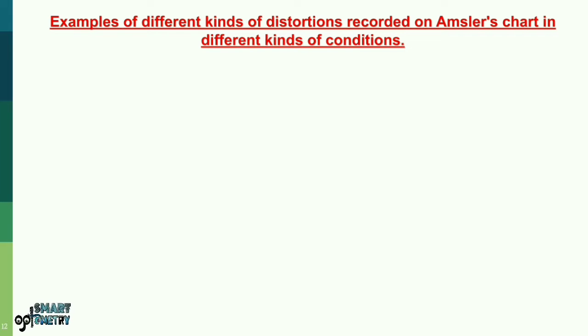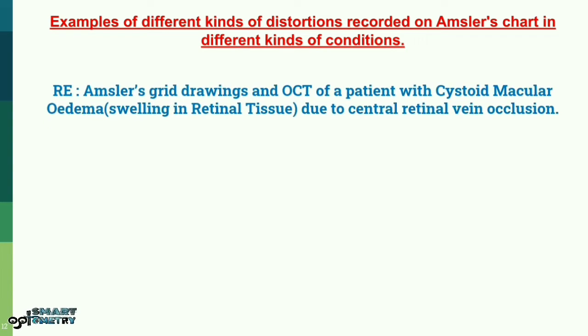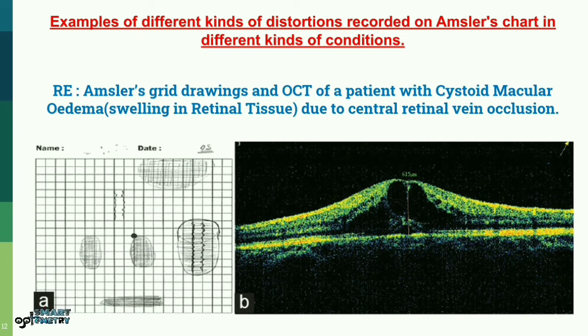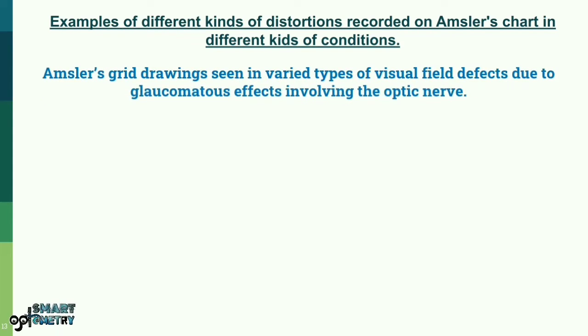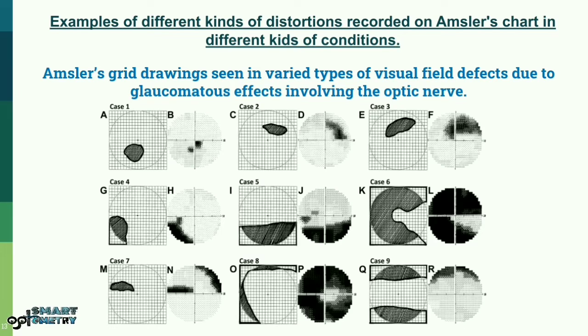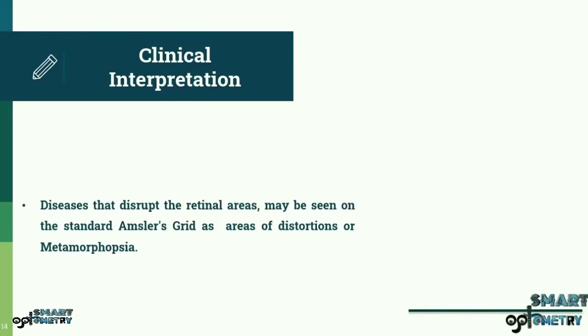Let us now look at the examples of different kinds of distortions recorded on Amsler's chart in different kinds of conditions. Here you can see a patient's Amsler's chart findings for the right eye. That is, in right eye, Amsler's grid drawings and OCT of a patient with cystoid macular edema, that is swelling in the retinal tissue due to central retinal vein occlusion can be seen here. Another example shown here are the Amsler's grid drawings seen in varied types of visual field effects due to glaucomatous effects involving the optic nerve.